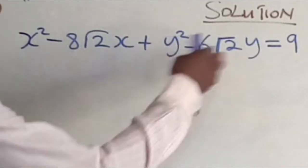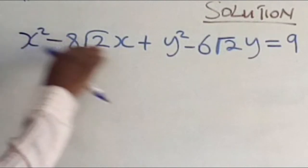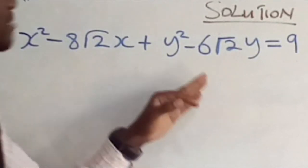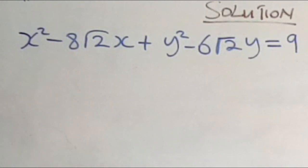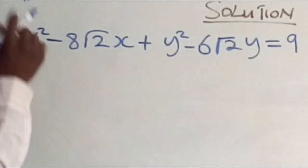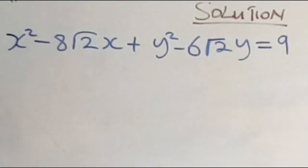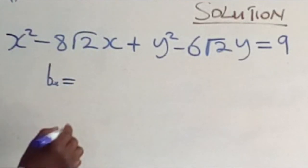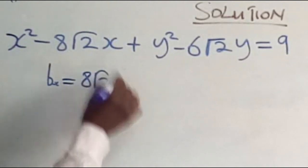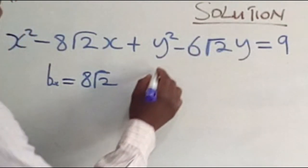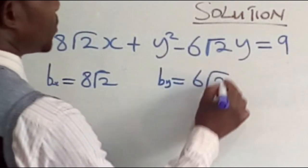We have already collected the like terms — x terms, y terms — and that equals 9. The next stage is to identify b in terms of x and b in terms of y. b in terms of x is the coefficient of x to the power 1, which is 8√2. Then b in terms of y is going to be 6√2.